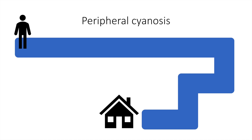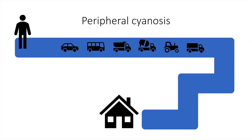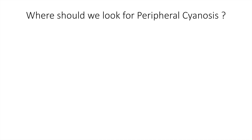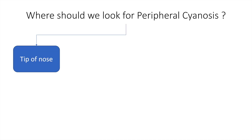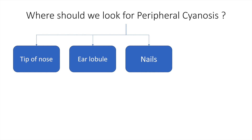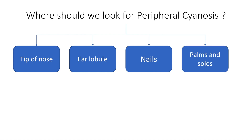Furthermore, if there is a lot of traffic on Steve's way, he won't be able to go home or may be delayed. From a medical perspective, arterial and venous obstruction can produce peripheral cyanosis. We look for peripheral cyanosis at the tip of the nose, the ear lobule, the nails, and palms and soles.